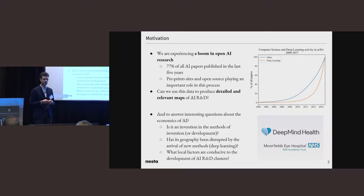We're going to be looking at three questions. The first one is does AI behave like a method invention or maybe development given that we're focusing on computer science? Has this geography been disrupted by the arrival of new methods such as deep learning? Do we see increasing volatility of the geography of the field followed by consolidation? And then what are the local factors that are conducive to the development of AI research and development clusters? We're really interested in understanding the extent to which the presence of related research capabilities and related industrial capabilities in a region explains its ability to become more competitive in AI research.